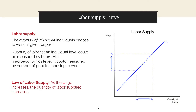Labor supply is the quantity of labor that individuals choose to work at given wages. The quantity of labor that an individual supplies could be measured by hours, or at the macroeconomic level, it could be measured by the number of people choosing to work. The law of labor supply states that as the wage increases, the quantity of labor supplied increases.